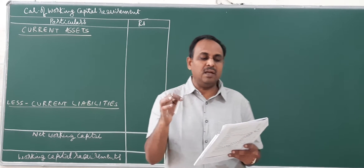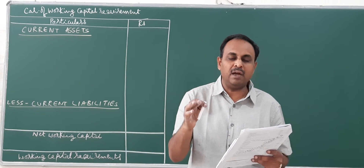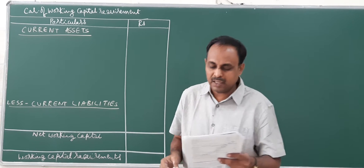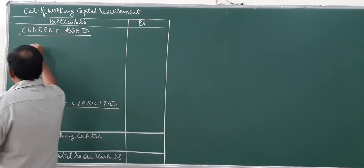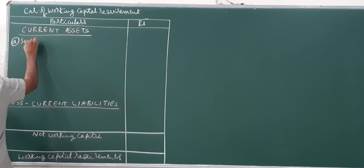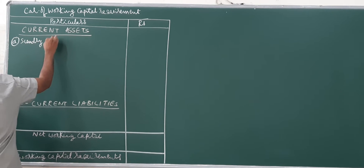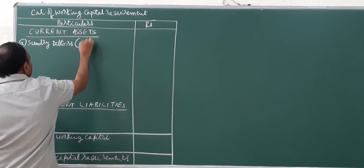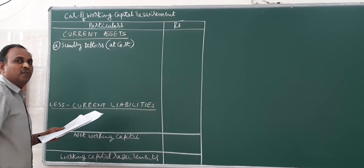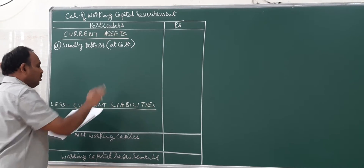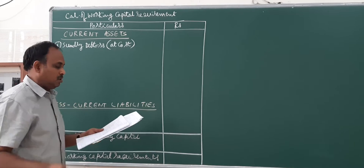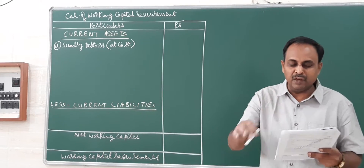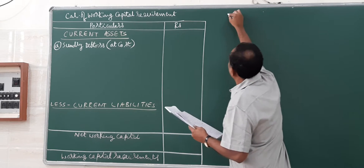Looking at the information: average credit period allowed to customers means credit sales, and that is recorded as sundry debtors. We need to find the value of sundry debtors. If nothing else is stated and cost information is available, we calculate debtors at cost. Here we don't directly know the cost of production, so we use working notes to find it.